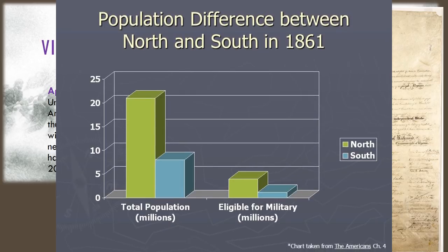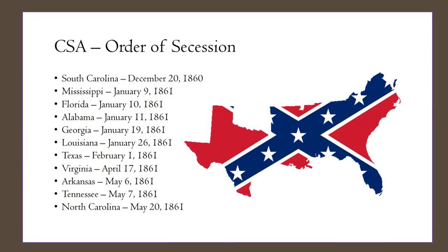Let's compare those numbers to the Union, which will have 21 states and a population of over 20 million. Here is a list in order of the 11 states that seceded from the United States. List the names of at least three other states that seceded in your notes from this list. Notice Virginia, which seceded on April 17, 1861.